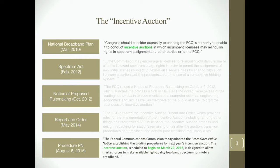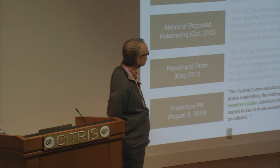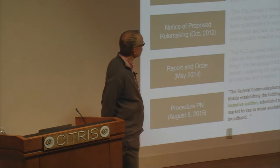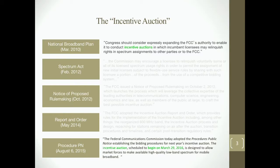So what is the incentive auction? It all began with the National Broadband Plan in March 2010, when the Obama administration put together a plan that said Congress should consider expressly expanding the FCC's authority to conduct incentive auctions — to my knowledge the first use of the term — in which incumbent licensees may relinquish rights in spectrum assignments to other parties or to the FCC. We want to take spectrum out of its less valuable uses and put it into more valuable uses as the demand for wireless broadband has grown. Congress enacted the Spectrum Act in 2012.